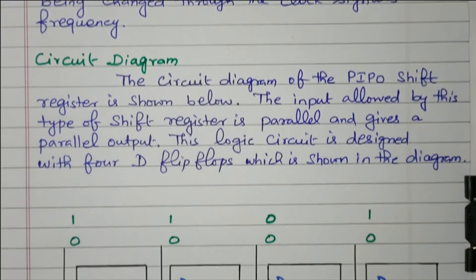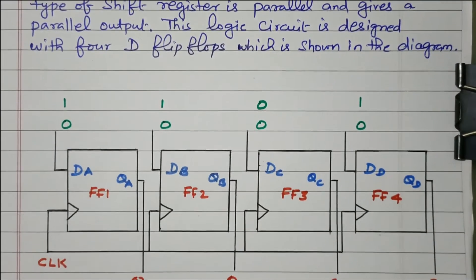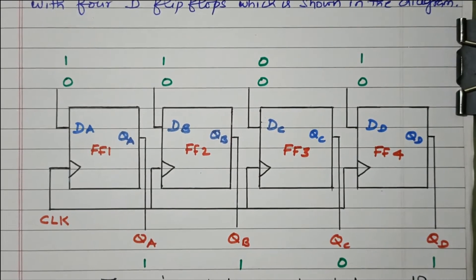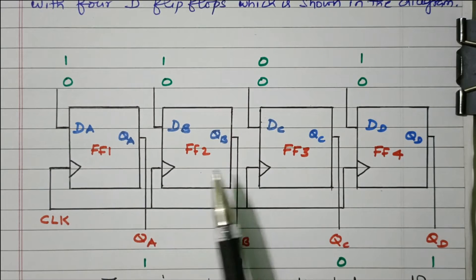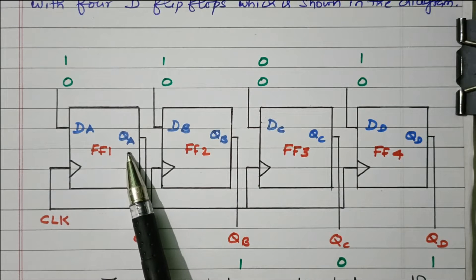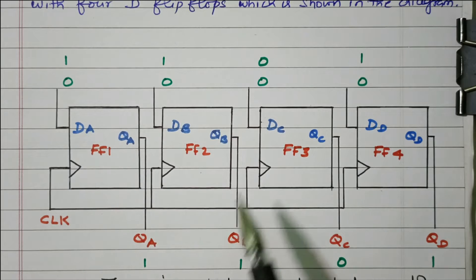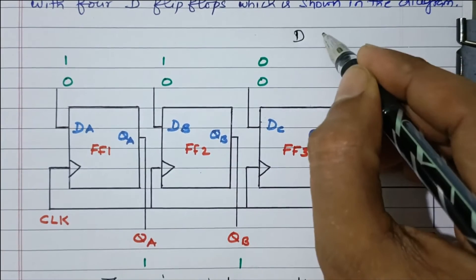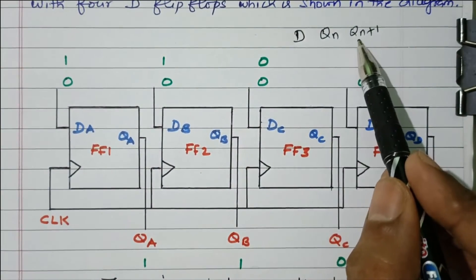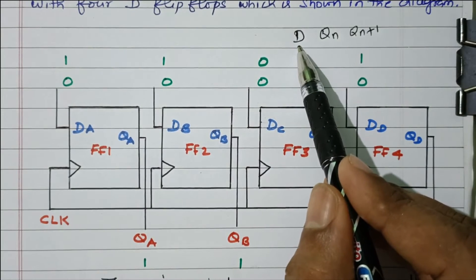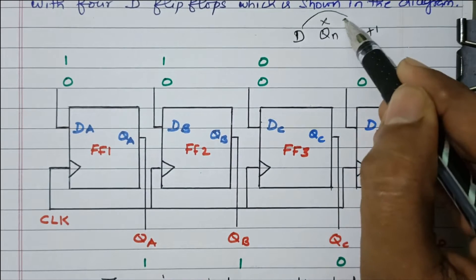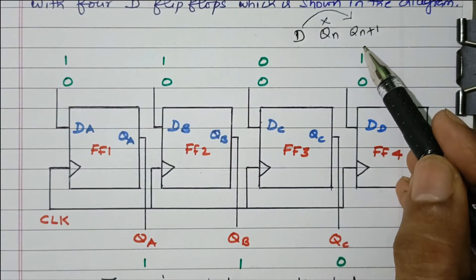Now we will refer to the circuit diagram. This register is constructed by D flip-flops — there are four flip-flops available. This is the clock pulse, this is the D input, and QA is the output. In a D flip-flop, the next state depends upon the input D value. It does not depend upon the present state. Whatever may be the present state, the input will be reflected in the next state output.